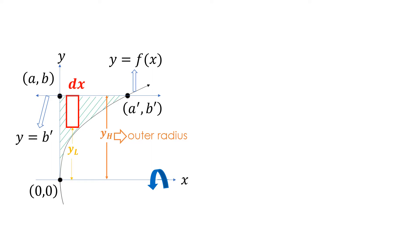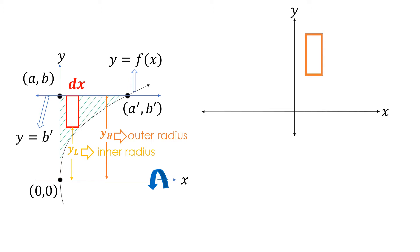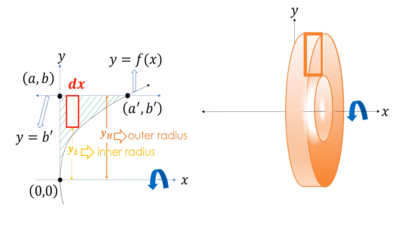yl is the distance from the lower part of the element down to the x-axis; we consider yl to be the inner radius. Considering the element we introduced, if this element is rotated or revolved about the x-axis, we will be forming a solid of revolution called a circular ring. The circular ring's thickness will be dx, whose outer radius is equivalent to yh and whose inner radius is equivalent to yl.